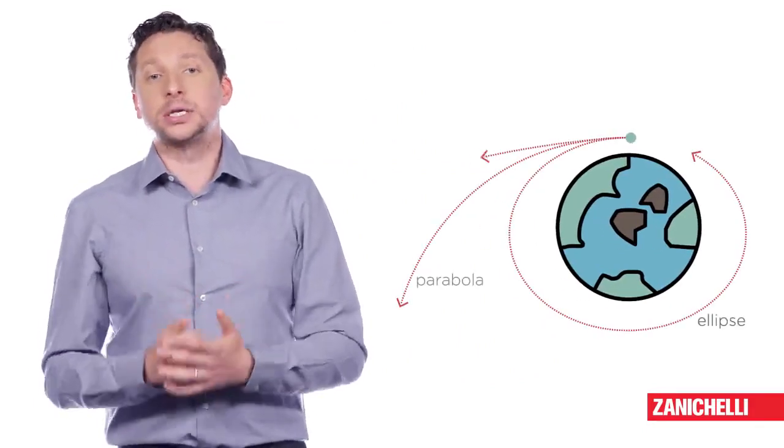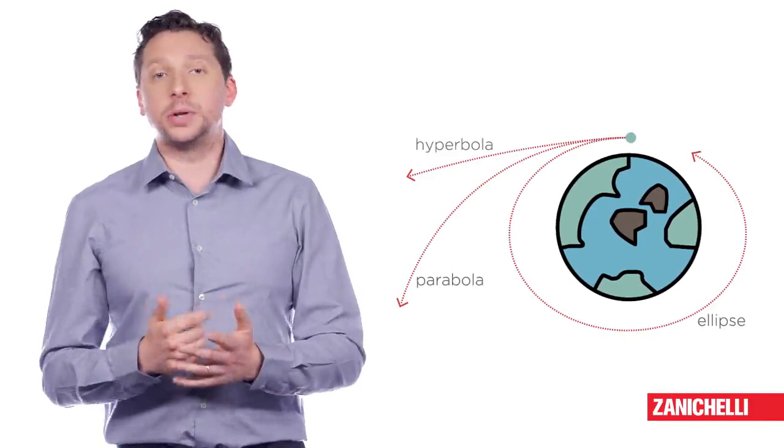As was later demonstrated, anybody under the influence of an inverse square law force such as gravity follows a trajectory that can be represented as a conic. Hence the trajectories of planets, moons and celestial bodies are all conic sections — ellipses, parabolas and hyperbolas.